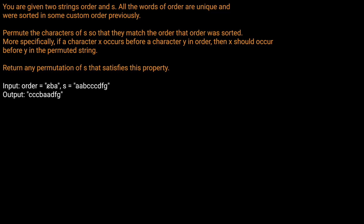We can see that the first character in our ORDER is C. So that means any C's should be first — we pull all the C's and put them into our string. Then the next character is B, we get the B and put it next. Then the next character is A, and we have AA because there are two A's. What's interesting about this problem is that we can actually be given letters in our string S that are not in ORDER.